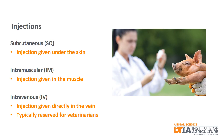The three most common routes of administration of injections are subcutaneous, intramuscular, and intravenous. Subcutaneous injections are given under the skin. Intramuscular injections are given directly into the muscle. Intravenous injections are given directly into the vein. IV injections are typically reserved for veterinarians.